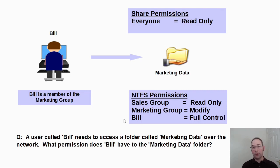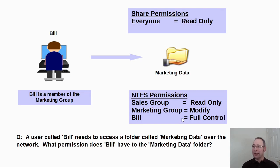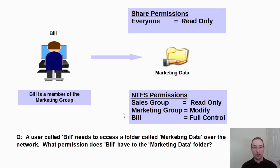But Bill as a user has also been assigned full control. Now NTFS permissions are known as cumulative, and that means the permissions add up. So the marketing group with modified permission can be added to the full control permission. In reality, full control already contains modify and full control is the most powerful permission. The only exception to this rule is if you ever see a deny permission — deny always takes precedence over everything. So from an NTFS permission point of view, Bill has full control to the Marketing Data folder.